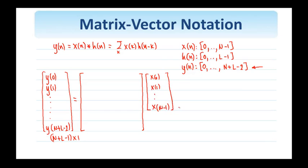So x clearly has dimensions n by 1 and therefore this matrix has dimensions n plus l minus 1 times n.